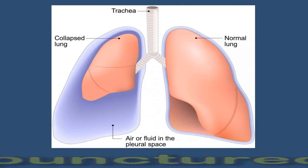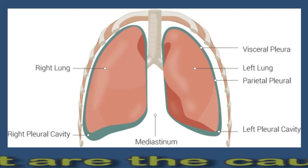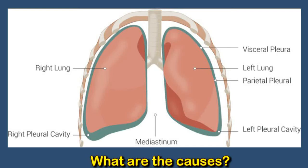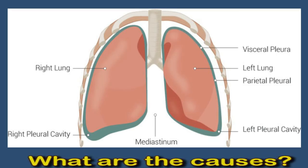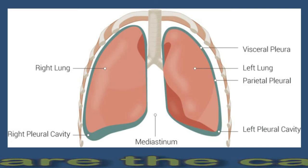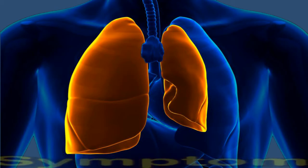A punctured lung can occur due to a violent injury such as a knife wound or gunshot to the chest. The condition can also develop as a complication from being on a mechanical ventilator. More commonly, a spontaneous punctured lung occurs in people who have an underlying lung disease, called a secondary spontaneous pneumothorax. A punctured lung in someone without lung disease is called a primary spontaneous pneumothorax.